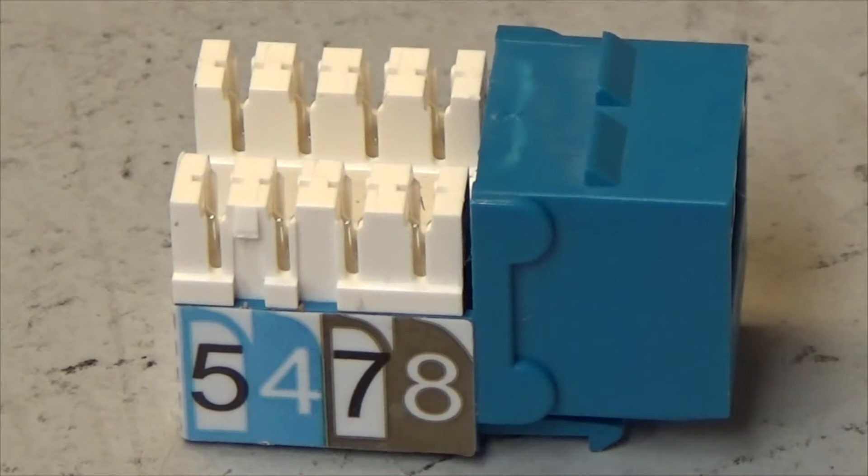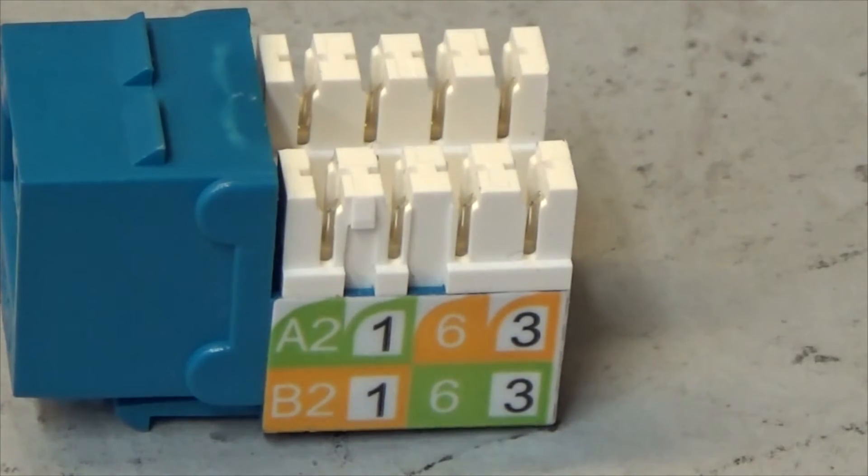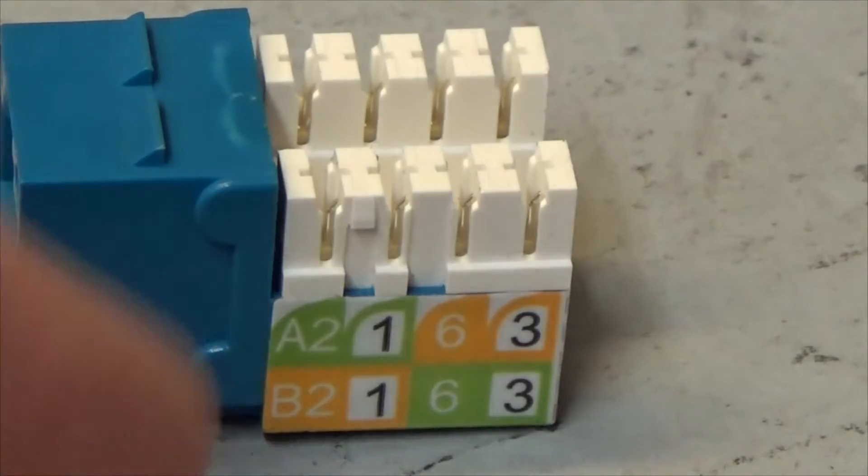Now my modular jack, I got my brown, brown white, blue, blue white on one side. Turn it around the other way and then I got my green, green white, orange, orange white and I got a choice of an A or a B network on which way I want to punch it down. It doesn't matter which way you do it as long as you do the other jack the exact same way.